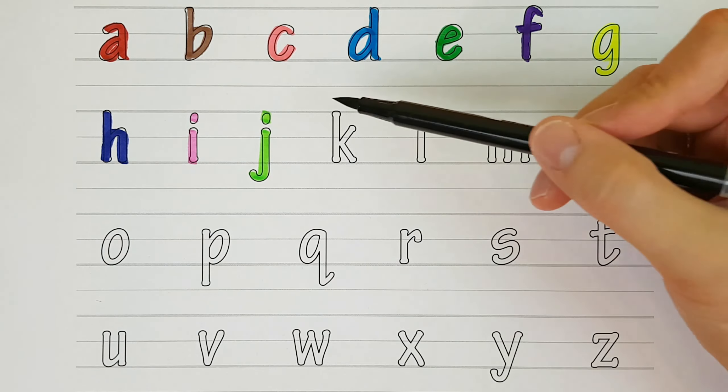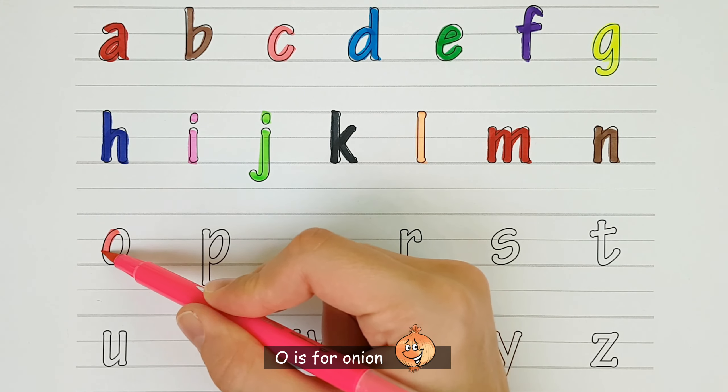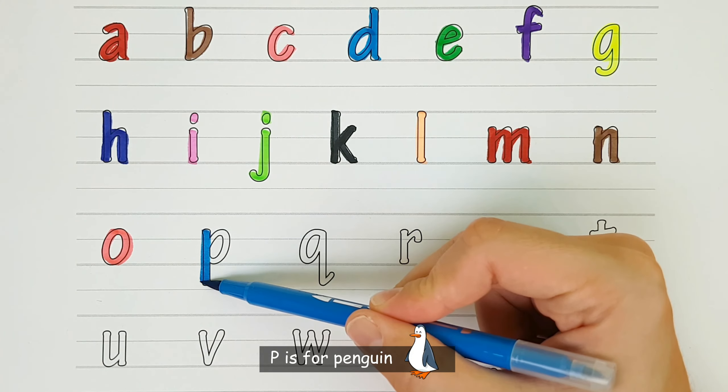M. M is for Mouse. N. N is for Nail. O. O is for Onion. P. P is for Penguin.